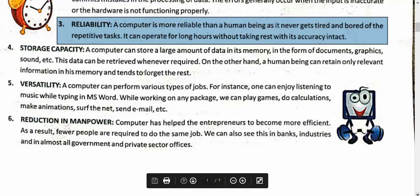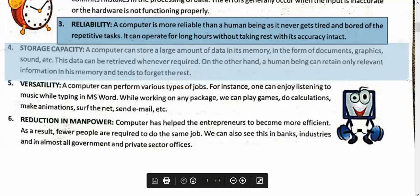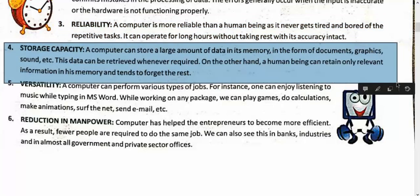Now coming to storage capacity. How many books can fit in your bag — two, five, seven, ten? In a cupboard, a hundred; in a house, five hundred or a thousand; in a library, five to ten thousand. But in a small computer chip, you can't even think of it. In one TB pen drive, the amount of data that can be stored is numerous — a large amount. Graphics — even a small CD can hold an entire movie.